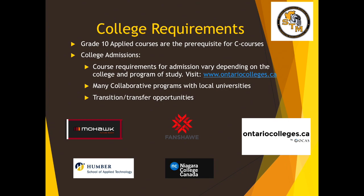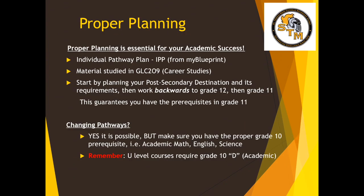College requirements: grade 10 applied courses are the prerequisite for C courses. Course requirements for admission vary depending upon the college and program of study. You can visit ontariocolleges.ca to search programs the same way as with university. If you can identify your post-secondary destination and its requirements, it lets you know what you need in grade 12, which guarantees you'll have the prerequisites in grade 11. You can also look at your individual pathway plan from My Blueprint and material studied in your career studies class.